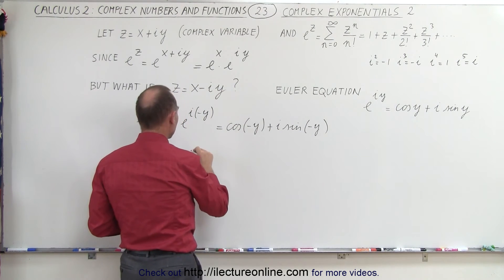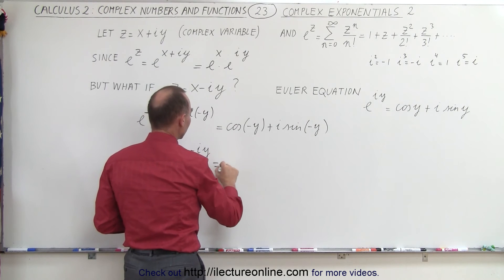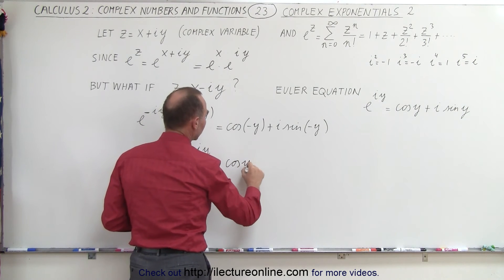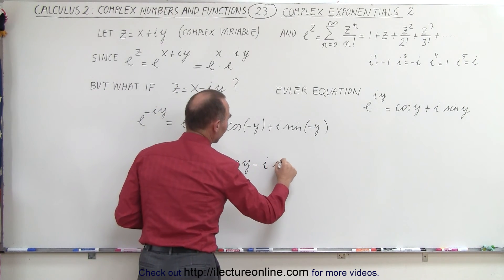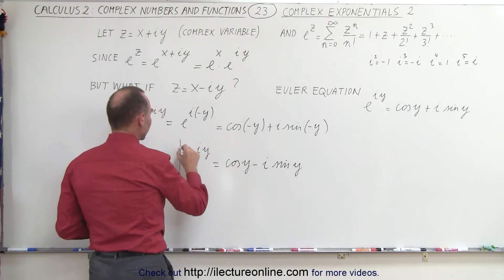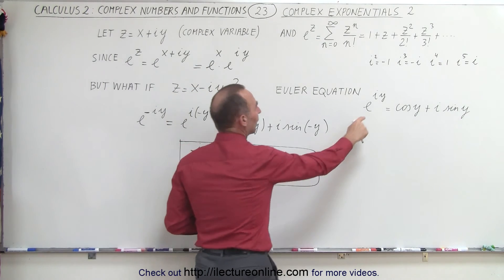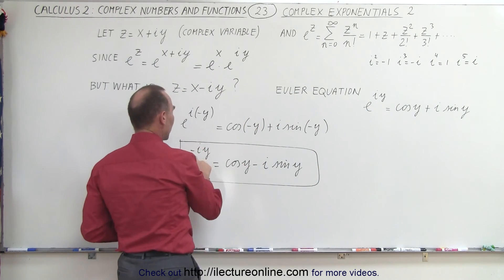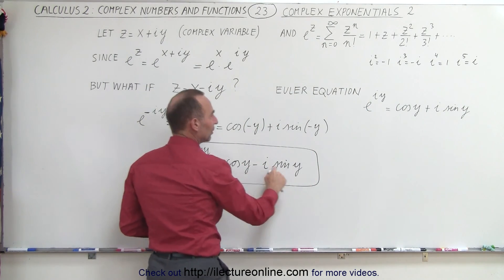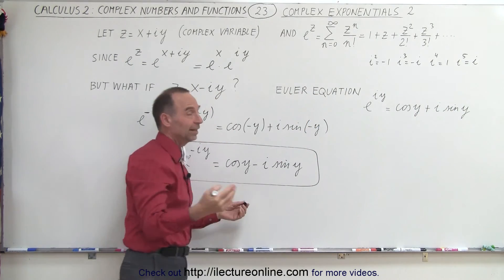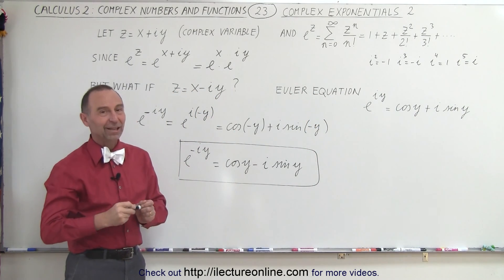So this can then be written as e to the negative iy is equal to the cosine of y minus i times the sine of y. And then we realize that the only difference between having e to the iy versus e to the negative iy is that we have a negative sign here instead of a positive sign and everything else is the same.